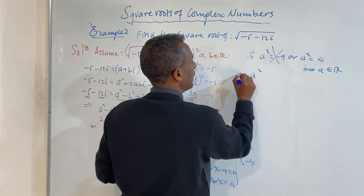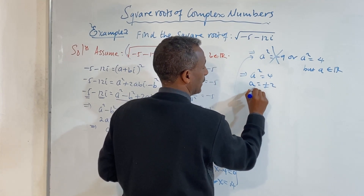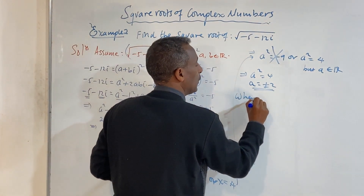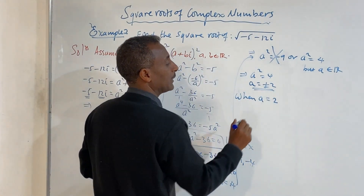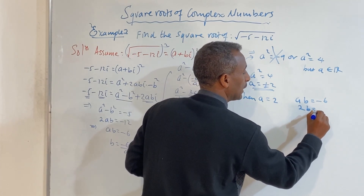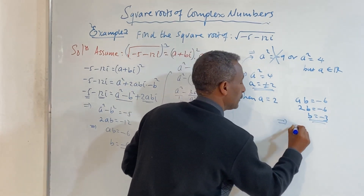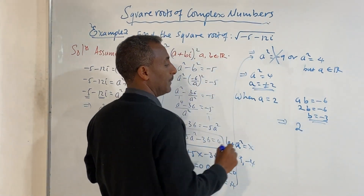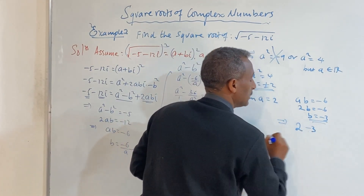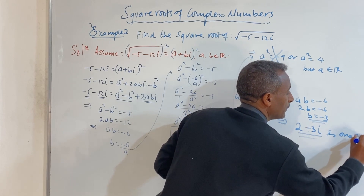Therefore, a squared equals 4, meaning a equals plus or minus 2. When a equals 2, we use ab equals minus 6, so 2 times b equals minus 6, giving b equals minus 3. This gives the root 2 minus 3i.